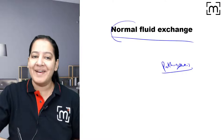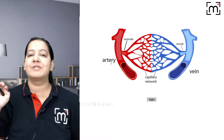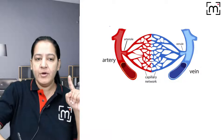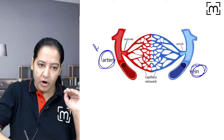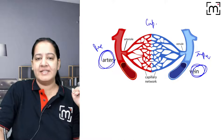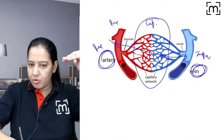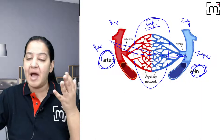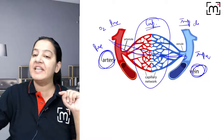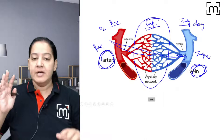Let me show you a simplified diagram. Here you can see the artery, the vein, and the capillaries connecting the two. The artery carries pure blood and the vein carries impure blood. Have you ever thought about how pure blood gets converted to impure? The exchange takes place inside the capillary — oxygenated blood enters and deoxygenated blood exits.